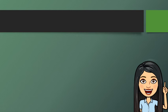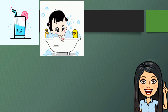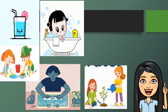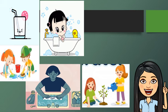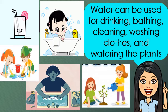Water can be used in different ways. I will show you some illustrations of the uses of water. Let's identify and enumerate its uses. Can you name the uses of water? Very good. Water can be used for drinking, bathing, cleaning, washing clothes, and watering the plants.